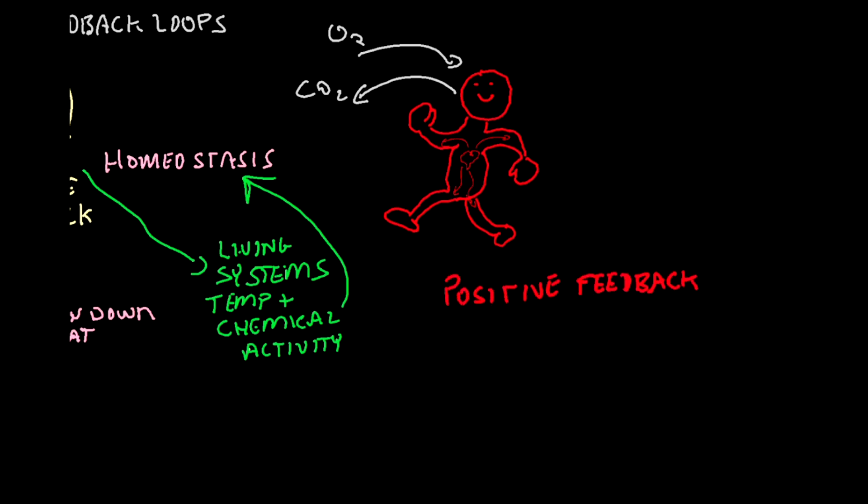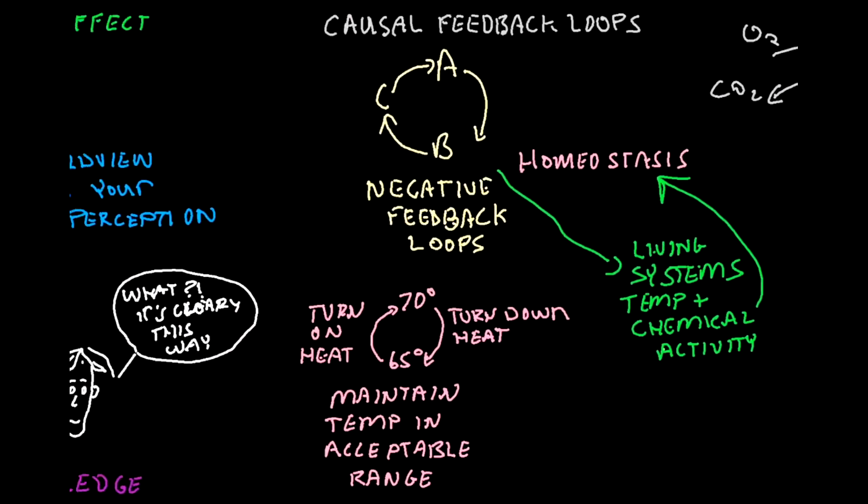A positive feedback loop is not usually a good thing. This usually is a system out of balance, so let's return to the thermostat example. We start at 70 degrees, and if the temperature begins to increase, the thermostat should turn off the heat.